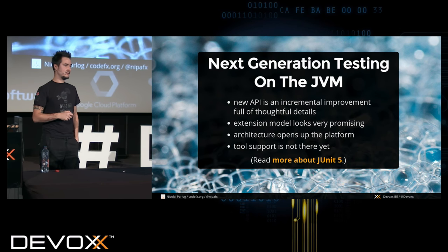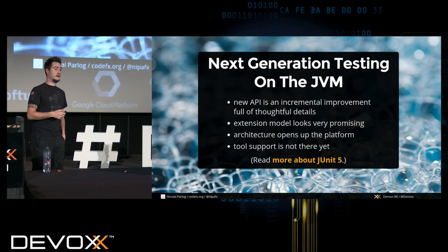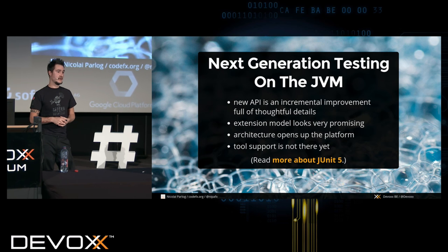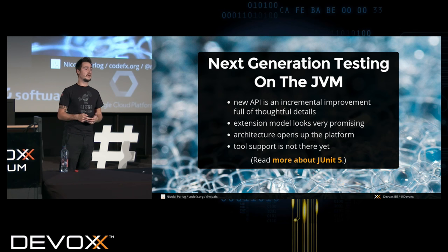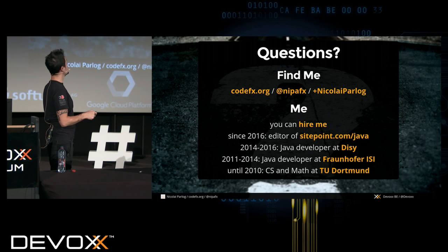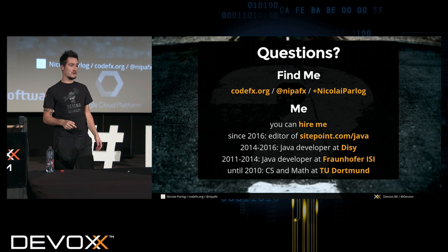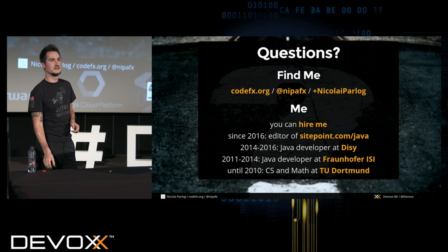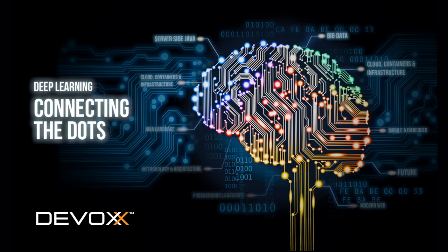Time's up. One last slide: we've seen a new API with some incremental changes — the Jupiter API will change a lot of details. The extension model is promising and going the right way — still not perfect, but issues are being addressed. The architecture opens up the platform. Tool support isn't there yet, but it might be — good tool support for all frameworks could be a stronghold for JUnit 5. I'm Nikolai — find me on Twitter or my blog, and I write for SitePoint's Java channel. Thank you very much.